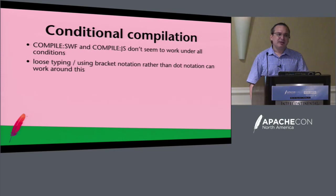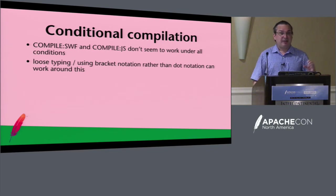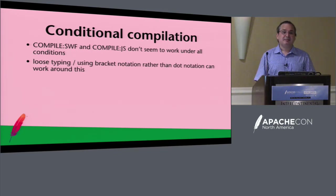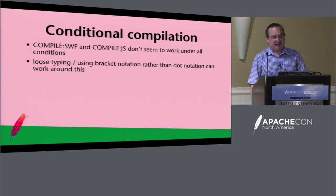Conditional compilation doesn't seem to work under all conditions. I put COMPILE::JS around things and it wants to compile in ActionScript and gives an error. The workaround is to set things as functions and put COMPILE::JS around the functions. Another way is using bracket notation rather than dot notation, which will allow you to do anything — and as an aside, if you want to access a private property on a class, just use bracket notation. It's a little naughty, but sometimes you have to work around things.